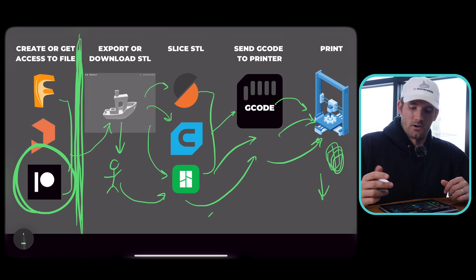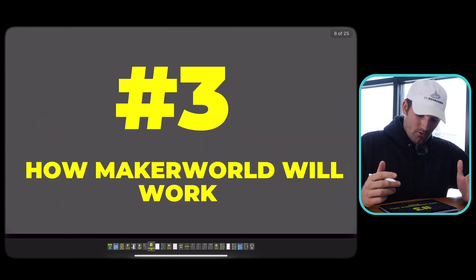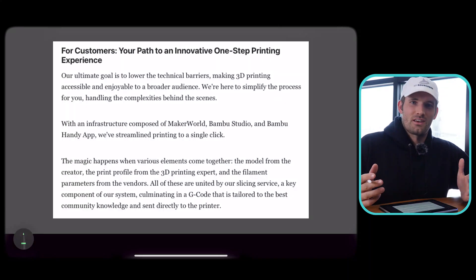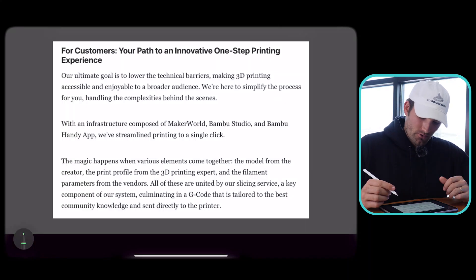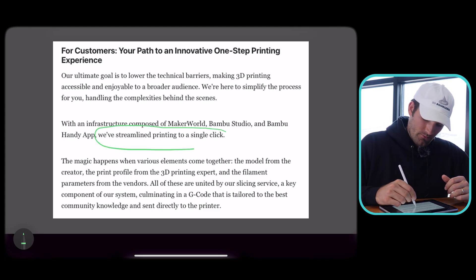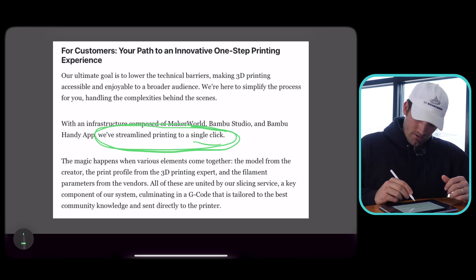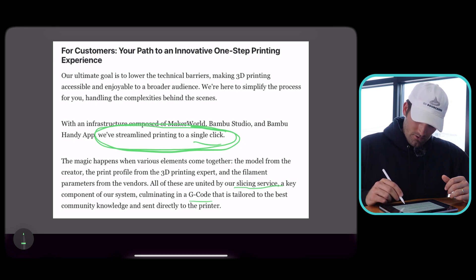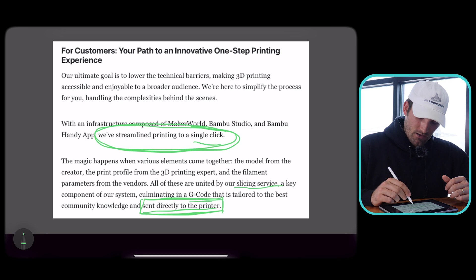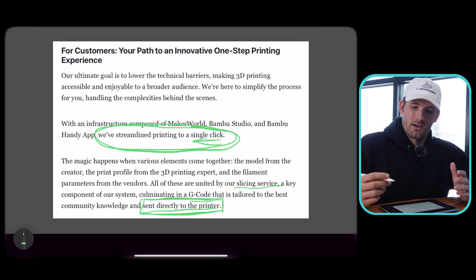Now, how MakerWorld will actually work — this is an excerpt from their blog post. What I want to highlight is: 'We've streamlined printing to a single click.' Their slicing service generates G-code tailored to the best community knowledge, sent directly to the printer. The G-code is sent directly to the printer with a single click — just remember that as we talk about what's coming up.